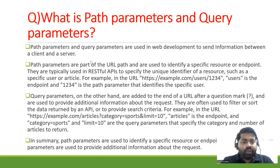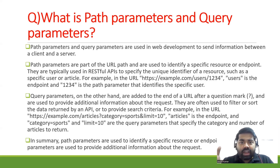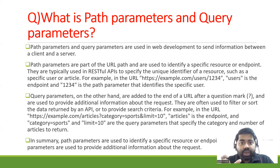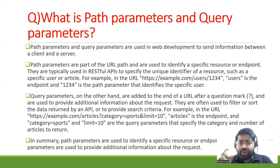Let me discuss what is a path parameter. Path parameters and query parameters are used in web development to send information between the client and server. Path parameters are part of the URI path and are used to identify a specific resource — for example, if you have a large number of resources but you want to get a specific one or a specific endpoint.